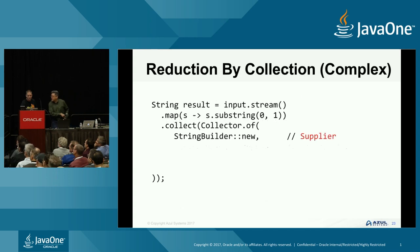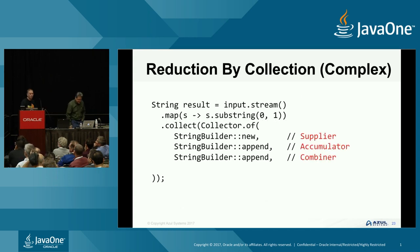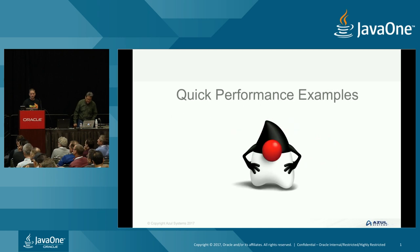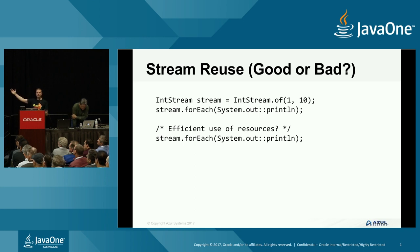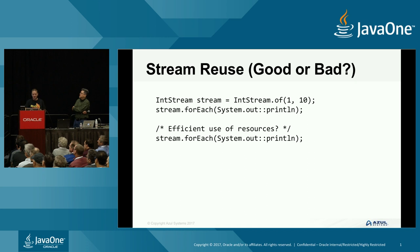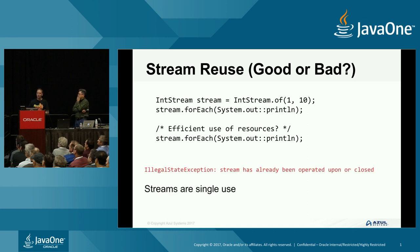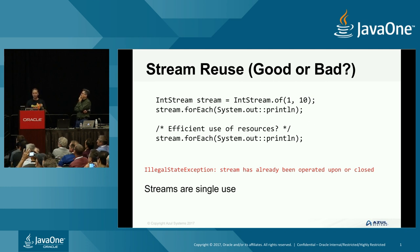Some quick performance examples. First: stream reuse - good or bad? We've got a stream of ints from one to 10, print those out. Why not reuse it for efficiency? The answer is no - that will throw an IllegalStateException, because the stream has already been operated on or closed. You can only use a stream once. That's the important thing.